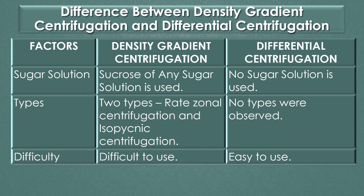Solution: A sugar solution such as sucrose or any other sugar solution is used in density gradient centrifugation. No sugar solution is used in differential centrifugation.